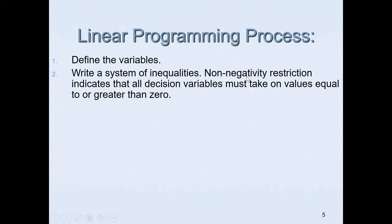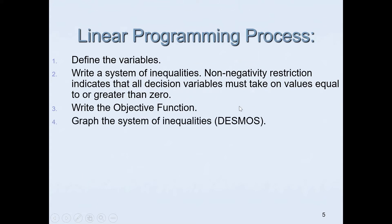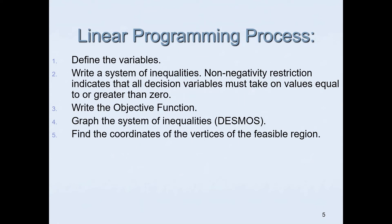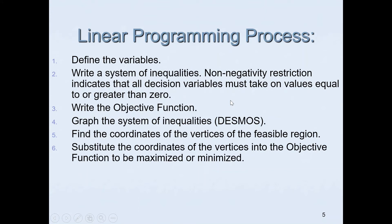For example, if the context is about car sales, we already know we cannot have a negative number of car sales, so it will be equal to or greater than zero. Then you need to write the objective function — the one that you will be maximizing or minimizing. Then you will need to graph the system of inequalities. In this video I will be using Desmos, the online graphing tool. You will need to identify the feasible region and then find the coordinates of the vertices, which you will substitute into the objective function.